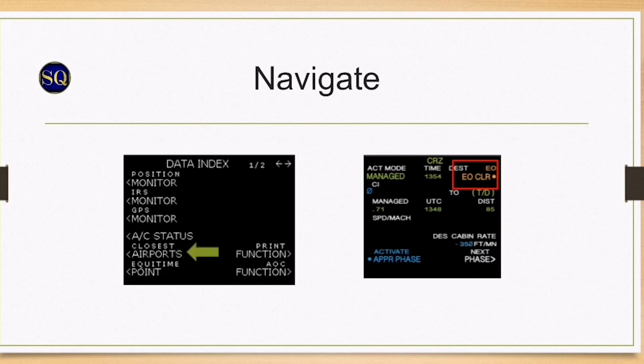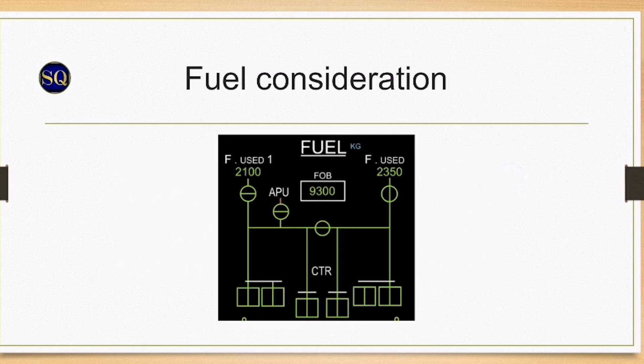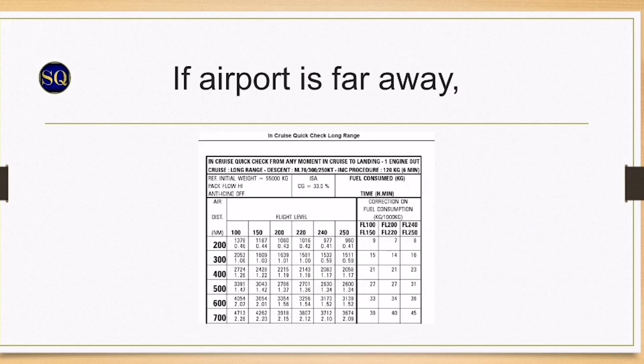Fuel consideration. The crew should consider opening the fuel crossfeed if they are sure that there's no leak or contamination. Carefully monitor the imbalance for possible leakage during crossfeed operations. If the nearest suitable airfield is a considerable distance away, the In-Flight Quick Check Long Range Table one engine out in the QRH performance can be used to determine the fuel consumption and time.